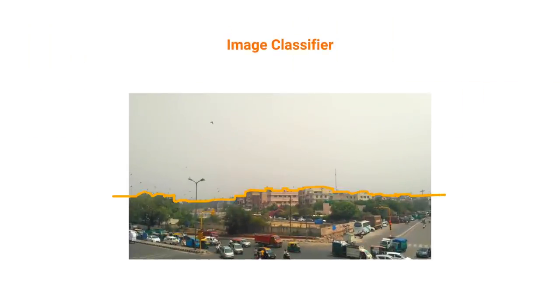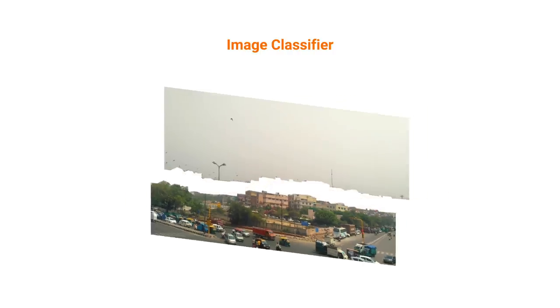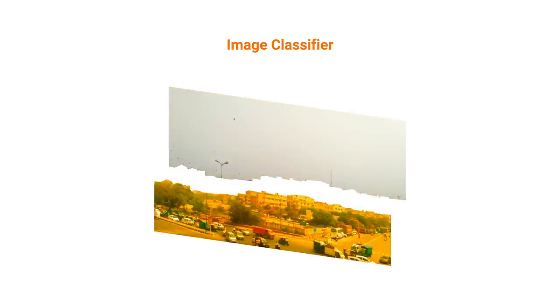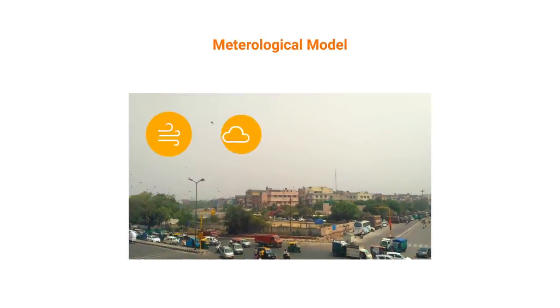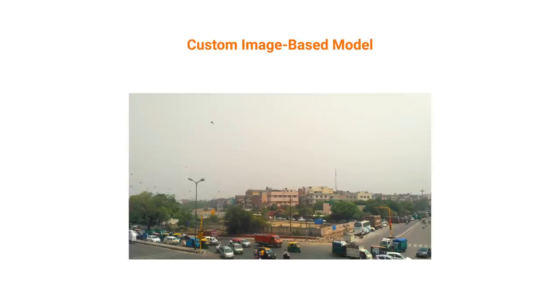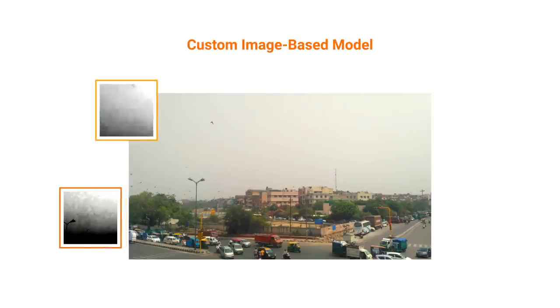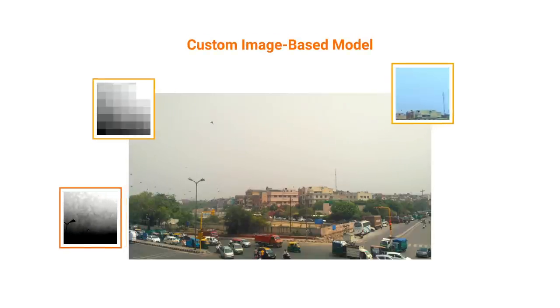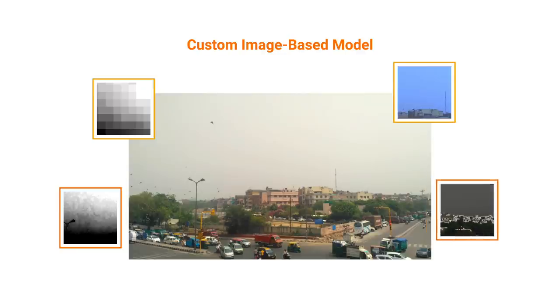AirCognizer has three models. The first is our image classifier, which classifies if the image has sky or not. The second model is a meteorological parameter-based model. The third model is customized for every user — it's an image-based model and takes image parameters to predict the air quality index.